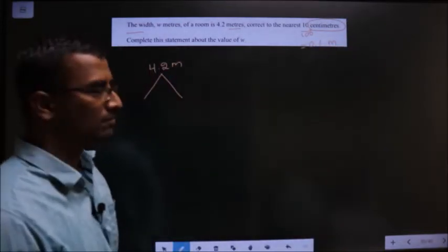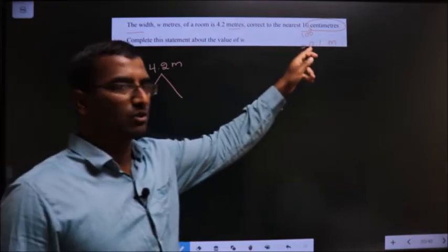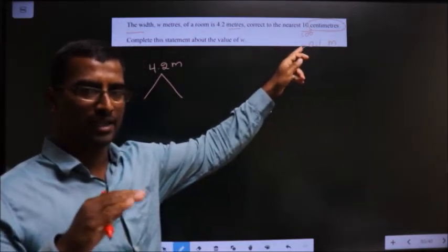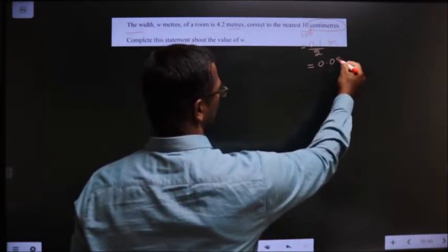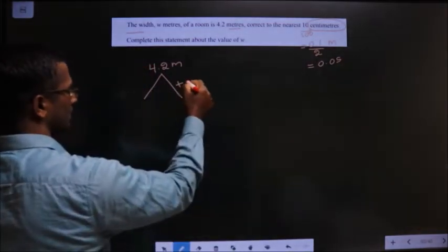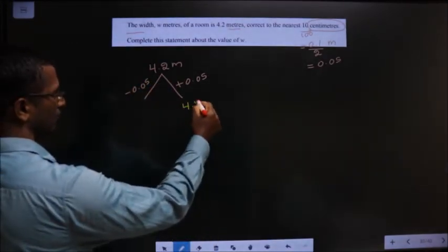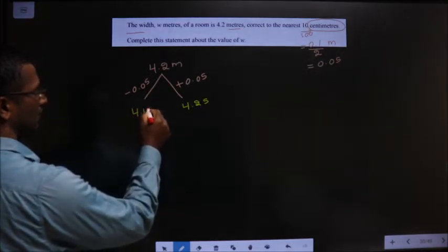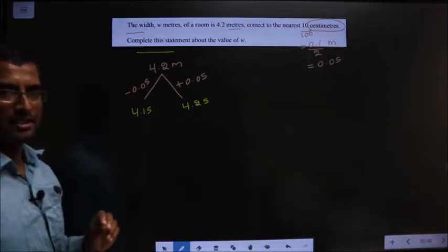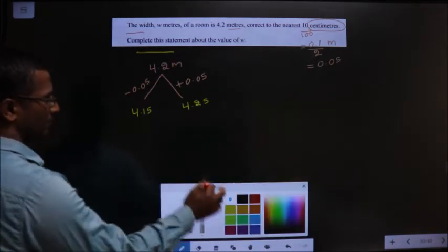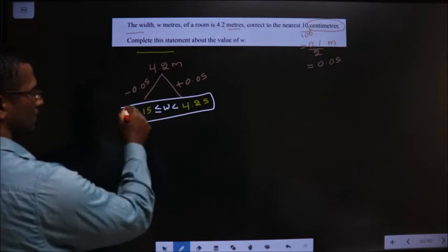Now what should I add and subtract? How do we decide that? It is nearest to 0.1, so you should do half of that. Half of 0.1 is 0.05, so add 0.05 and subtract 0.05. We get 4.25 and 4.15. Complete this statement about the value of W: this less than or equal to W less than this. So this is the answer.